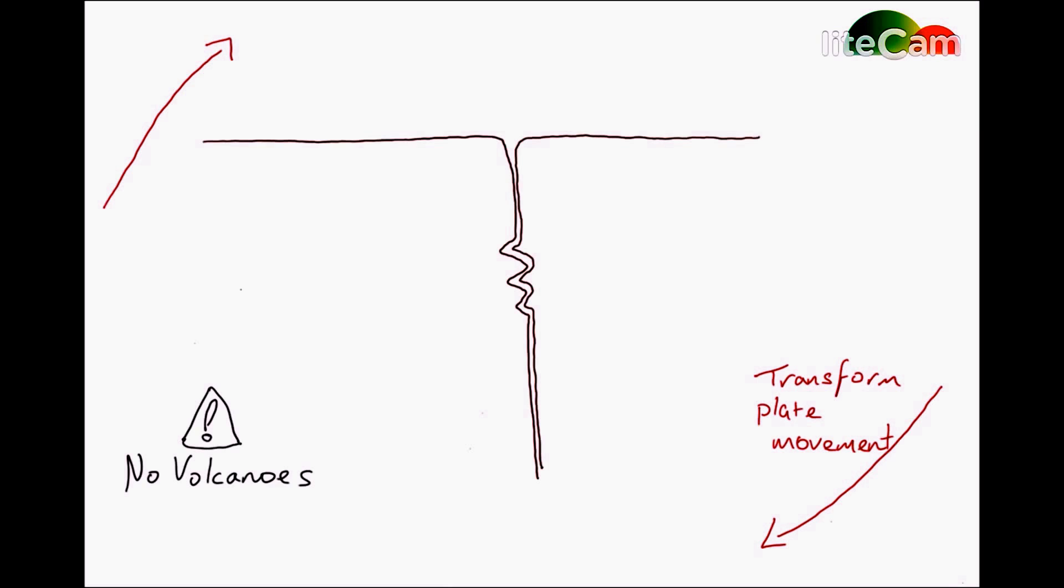It's important to note that in conservative plates you do not get volcanoes. The reason why you do not get volcanoes is because the plate thickness is normal and there's no gap, because they're just moving side by side as a transform movement.